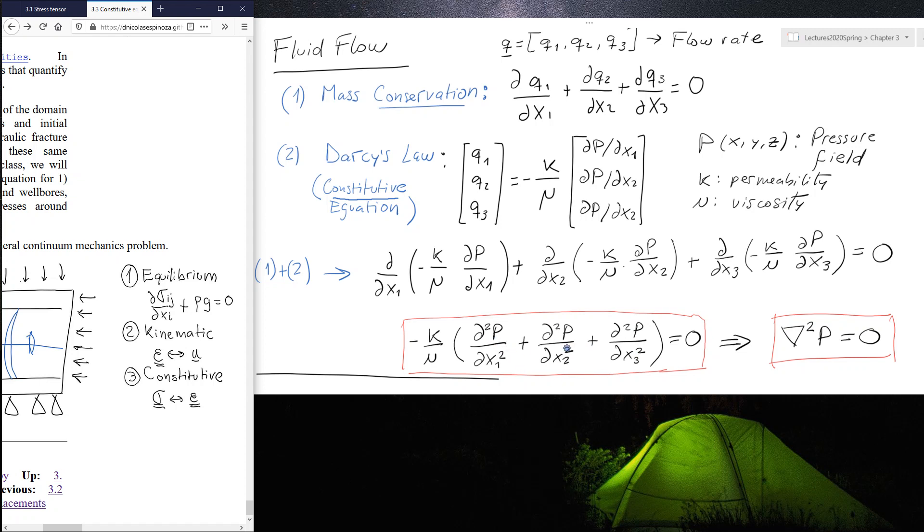It's a second derivative of pressure with respect to space. And considering the non-trivial case in which I do not have a permeability which is equal to zero, then in order to guarantee this equality to be equal to zero, all of this has to be equal to zero.